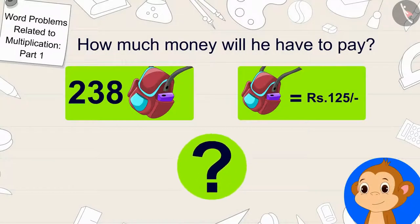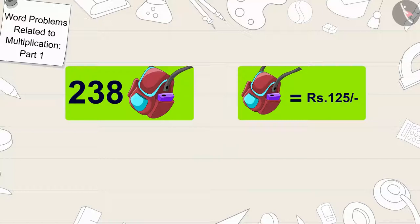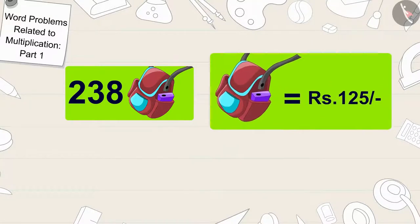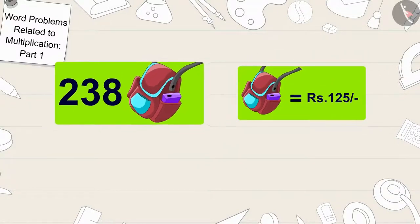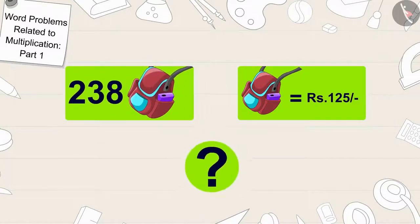Children, can you help Babban find a solution to this question? Children, whenever we have been given the cost of one item and we have to find the total price of many items, then what process will we use?